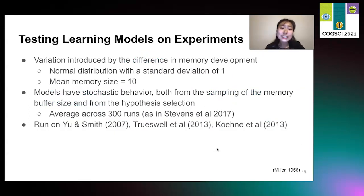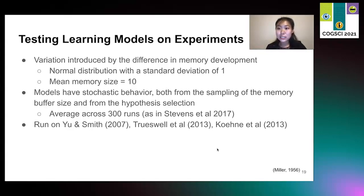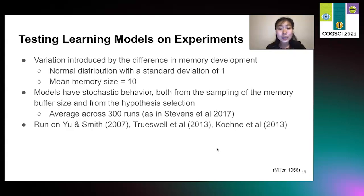We tested these learning models on various experiments, and we introduced individual variation through differences in memory development — that is, the size of the memory buffer — using a normal distribution with a standard deviation of 1 centered around a mean of 10, which is similar to the number of objects that adults can be learning concurrently. These models have stochastic behavior both from the sampling of memory buffer size and from the hypothesis selection, so we average across 300 runs. We ran these on the three experiments presented in Stevens et al. 2017, including the Yu and Smith, the Trueswell et al., and the Kachergis et al. — these are all detailed in the paper.